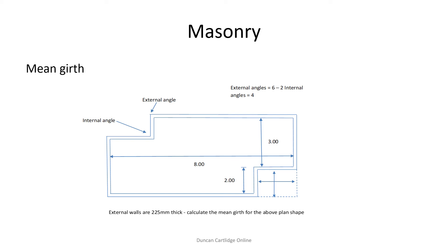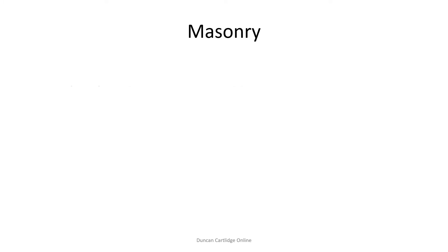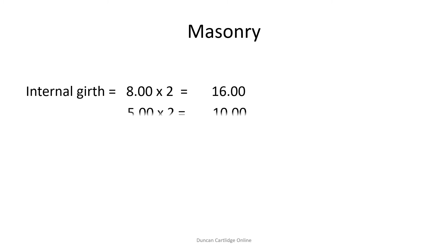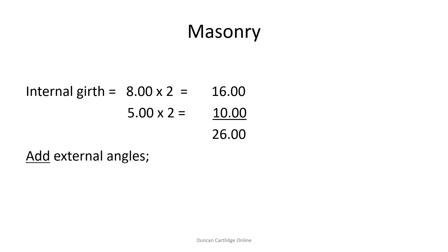Also, the insets at top left and bottom right form part of a rectangle. So here we go. This time we are working with internal dimensions. The internal girth on the previous slide is 26 metres, and to this we add the allowance for the external angles, as detailed on slide 6.